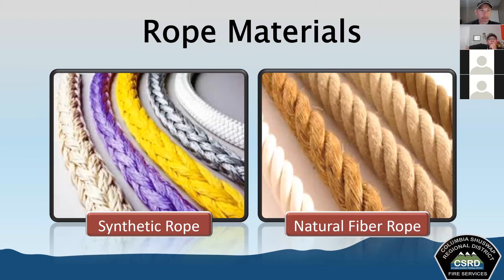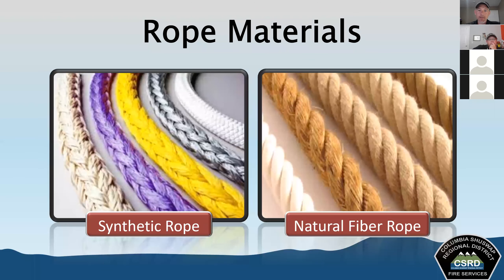Ropes are made with a variety of different materials. The two basic categories are synthetic rope and natural fiber ropes. The rope material affects its use and longevity. Natural fiber rope loses strength when wet, rots easily, and is being replaced with synthetic rope — you'll very seldom find natural fiber ropes in fire departments now. With synthetic fibers we're looking at materials like polypropylene, polyester, nylon, Kevlar, and Spectra.